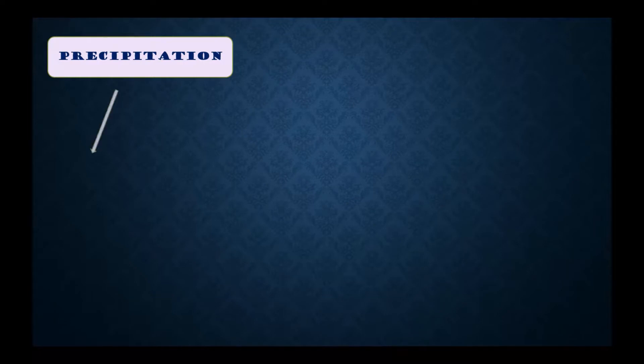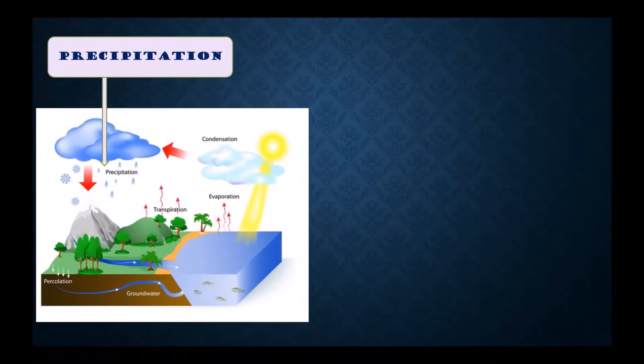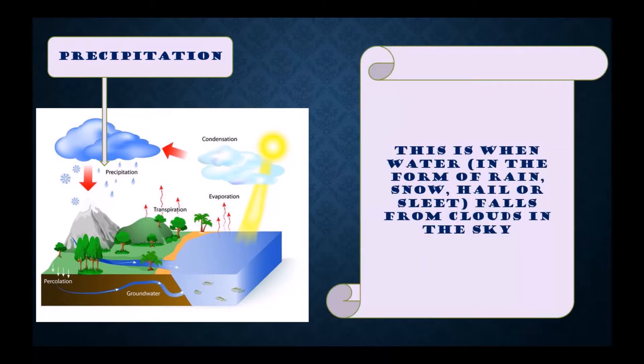Next is precipitation. This is when water in the form of rain, snow, hail, or sleet falls from clouds in the sky.